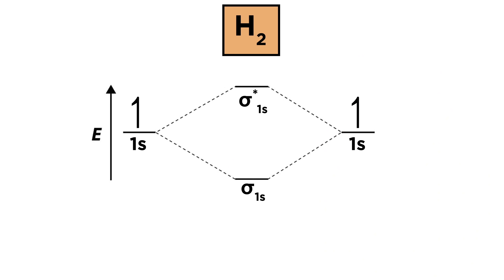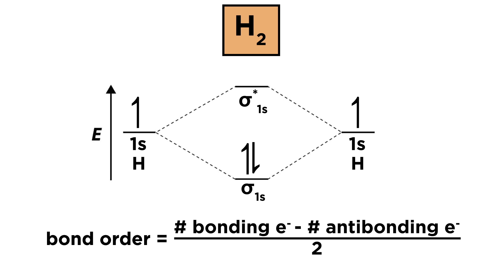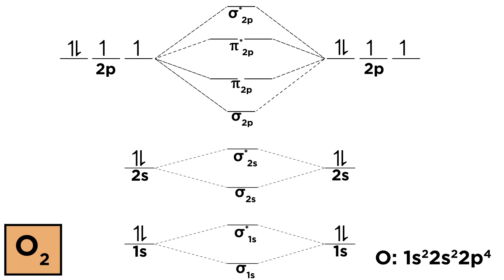Sometimes we have to generate orbital diagrams for a molecule. To do this we show each atom on the sides with its respective atomic orbitals and the molecular orbitals go in between. Here, each hydrogen has one electron in the 1s orbital, so they both go to fill up the bonding orbital, generating a molecule of H2. We can use these diagrams to calculate the bond order of the molecule, which is given by the number of electrons in bonding orbitals minus the number of electrons in antibonding orbitals divided by two. Here that gives us a bond order of one, which is why H2 has a single covalent bond.